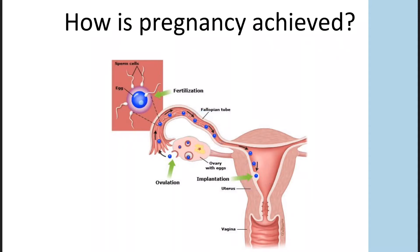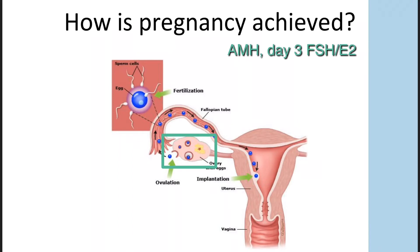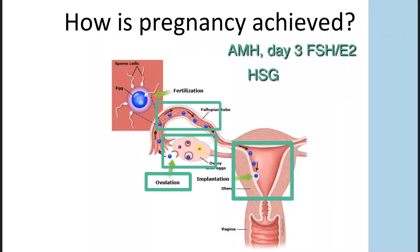So, as you can imagine, the main components of the fertility evaluation are checking ovarian function, checking to make sure ovulation is happening, checking to make sure the uterine cavity is normal and the fallopian tubes are open, and making sure the sperm are ample in number and motility to make the distance they need to go.